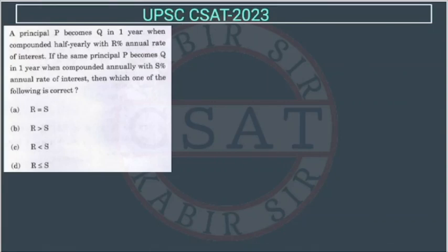Now, let's see this question. This question is from compound interest. So what the question is saying? A principal P becomes Q in one year when compounded half yearly with R percent annual rate. So they have given annual rate, but this is compounded half yearly.